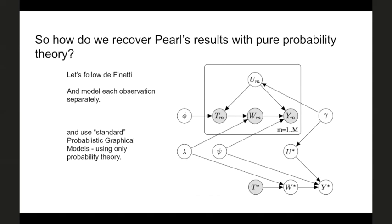Another important difference: in probabilistic graphical models you might have a latent variable U for computational convenience, often in complete-data exponential family form. This is absolutely not what Pearl does — Pearl puts U in there to cause trouble. U is high-dimensional and kind of nasty — it represents all the problems the world could cause for you. Pearl is mostly interested in being complete about causal scenarios but fairly straightforward on statistical ones, so the observed variables T, W, and Y will have just a small number of states — in this case study, just two states each.